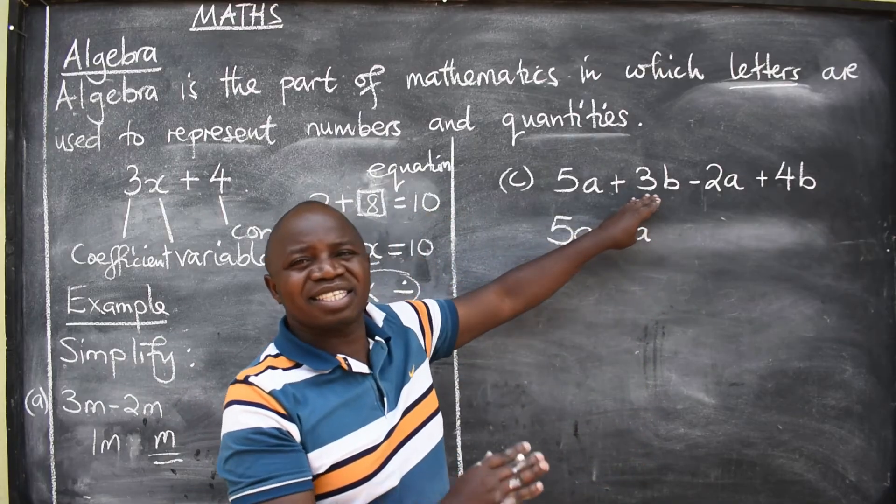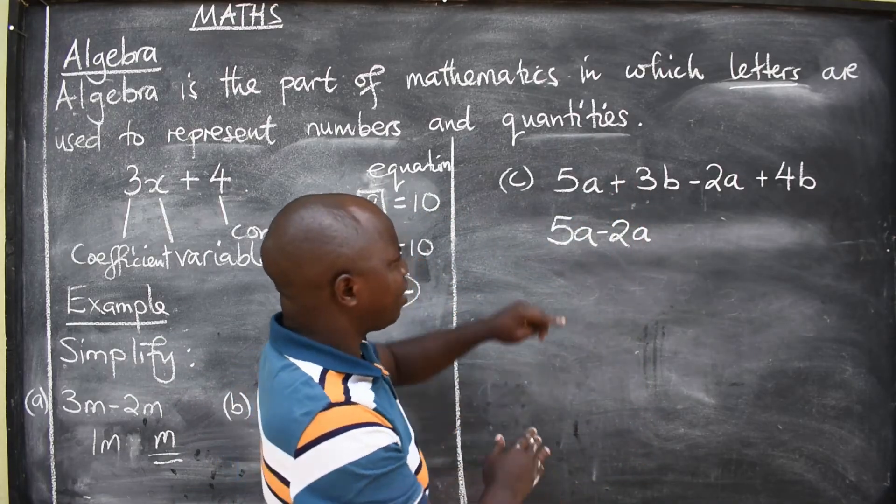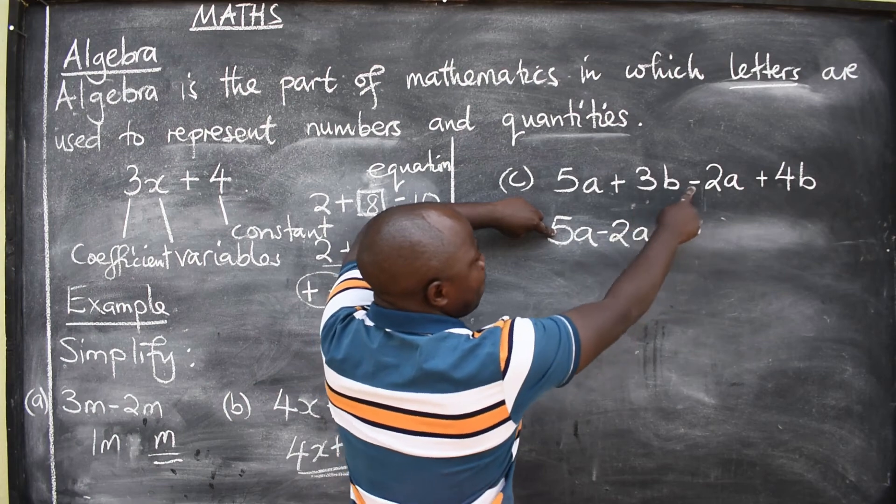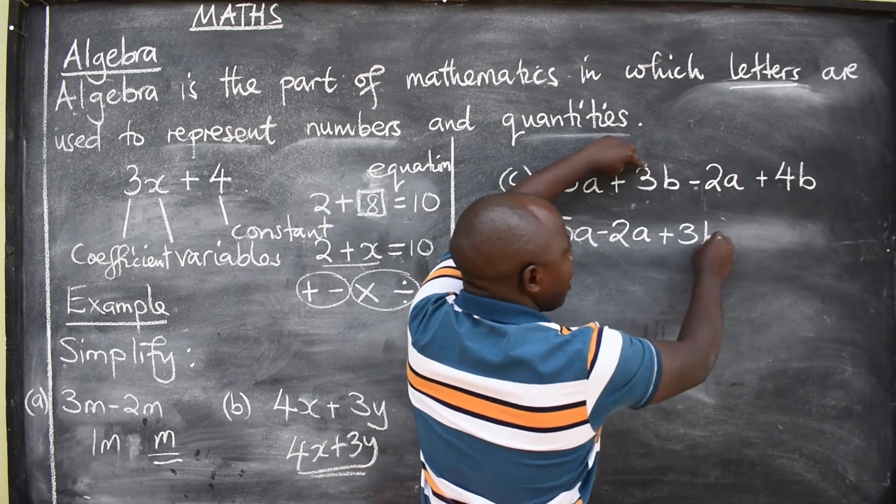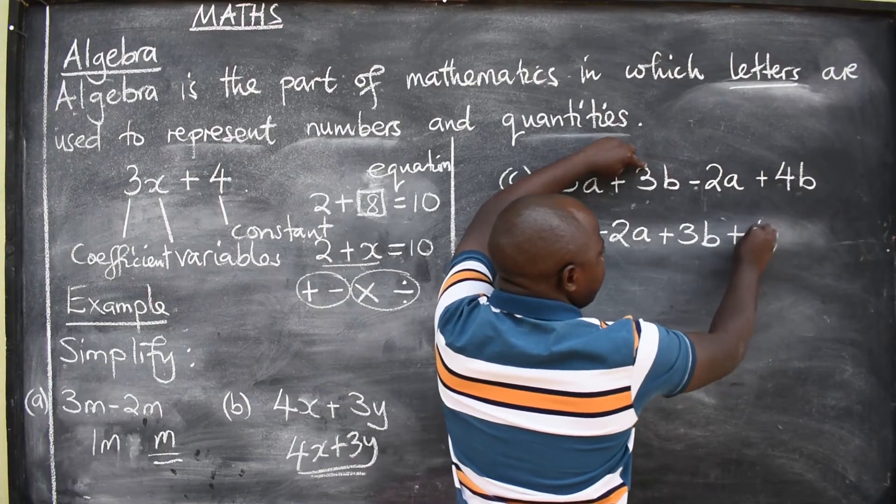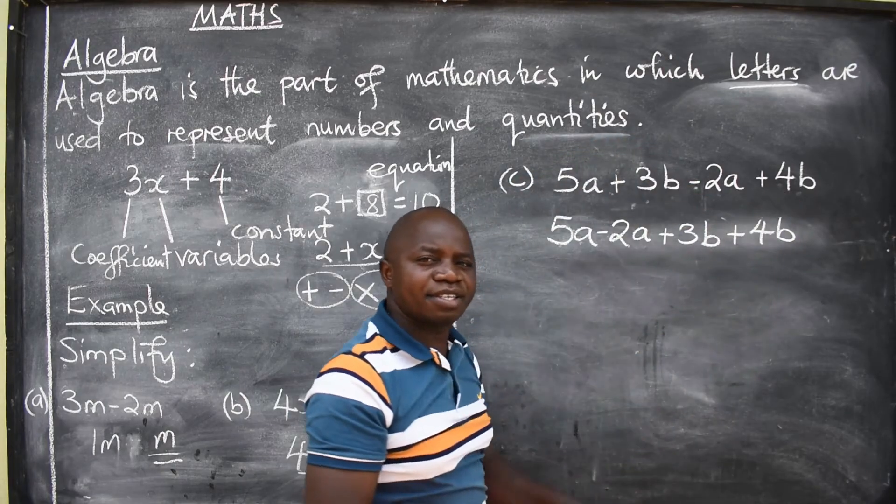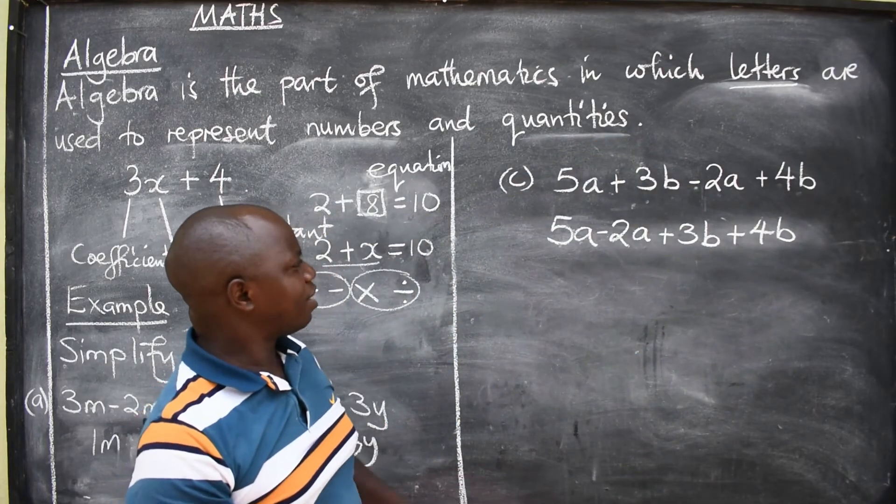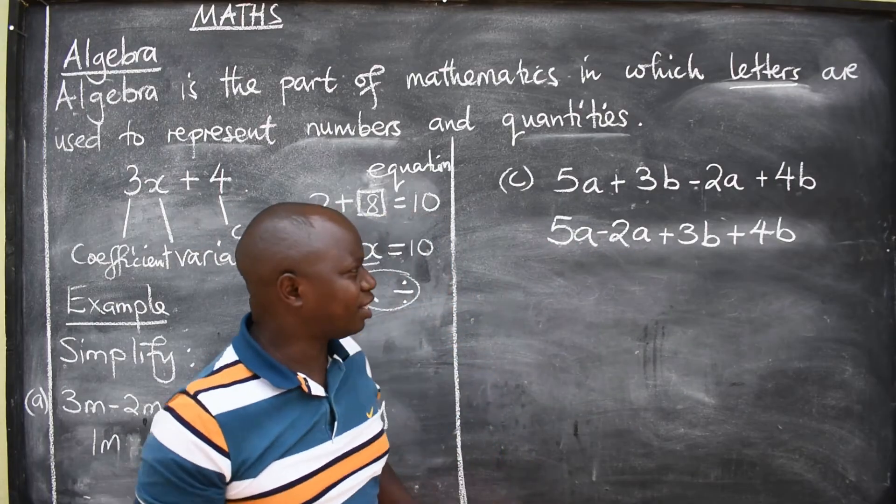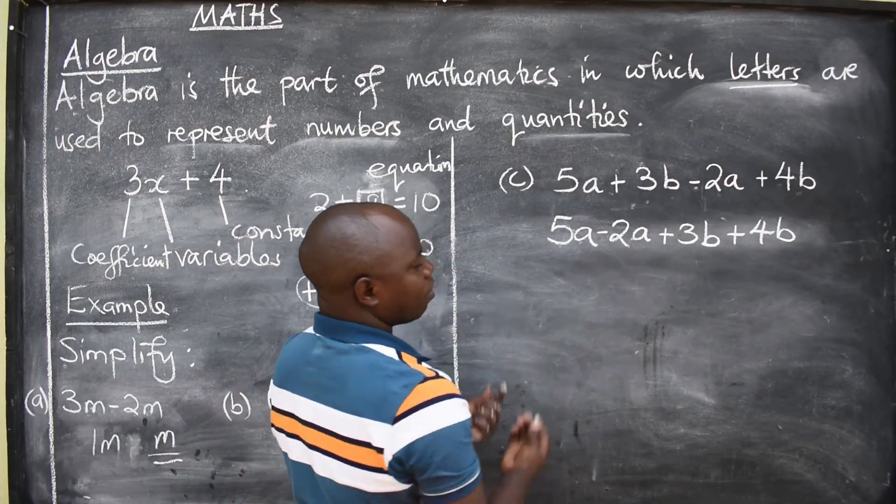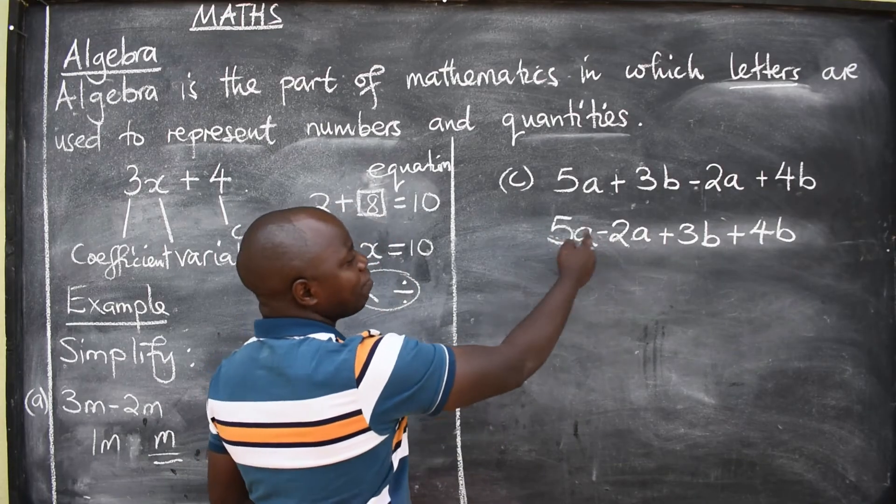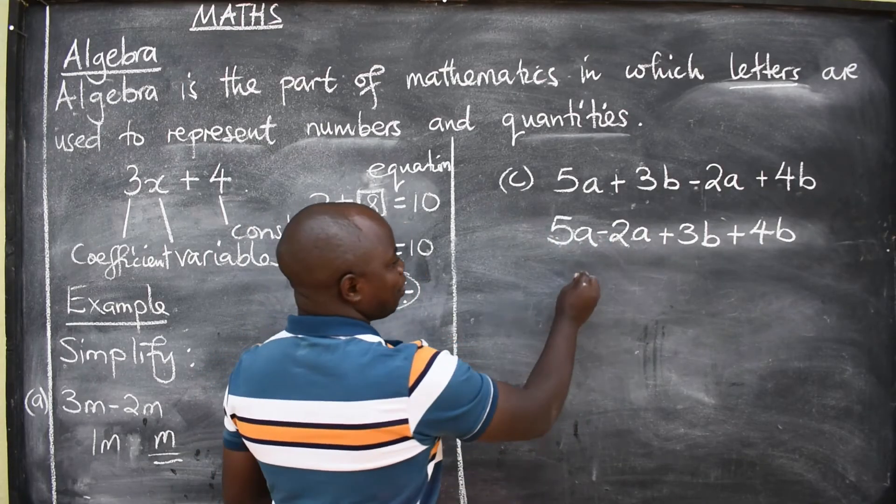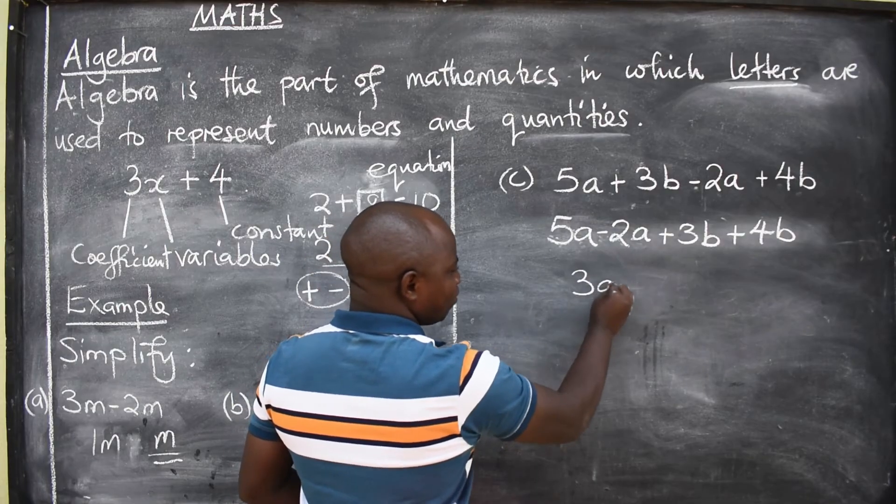You write the signs the way you are seeing them. So, 5A minus 2A, then plus 3B, the other pair is here, plus 4B. Like that. Like I was saying, like terms can be added, can be subtracted. So, these are like terms. I'll subtract them. What is 5 minus 2? It will give me 3. The letter involved is A.